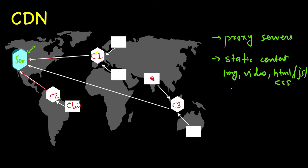When I request amazon.com and another user requests amazon.com from a totally different part of the world, why does their request get routed to one CDN whereas mine gets routed to a different one? Whenever we request any website, domain name resolution takes place. When a client requests a site, through DNS resolution it will be provided the IP address of the nearest CDN server instead of the main server, and the request will be made to that IP address.